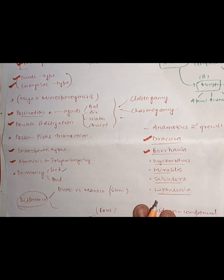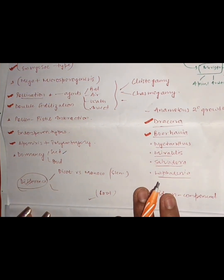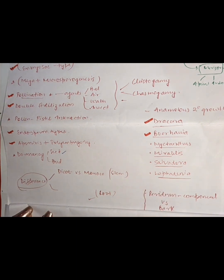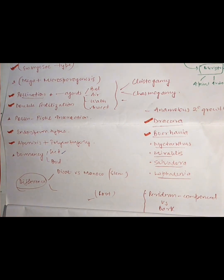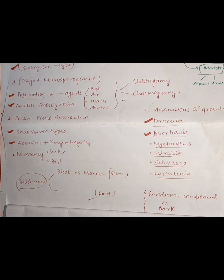According to the new syllabus, there are differences between dicot and monocot. When you study dicot and monocot, there are three parts in our plant: root, stem, and leaf. At least you should know the differences between dicot and monocot in terms of stem, root, and leaves. You need to prepare this.